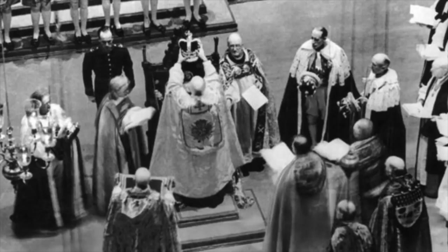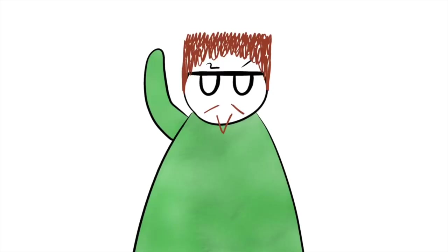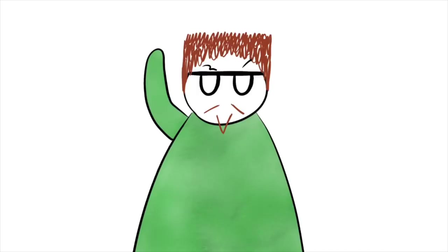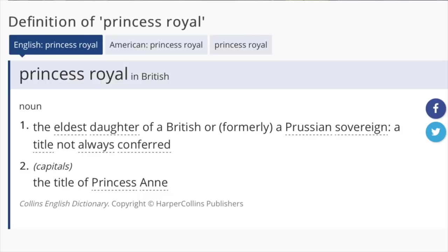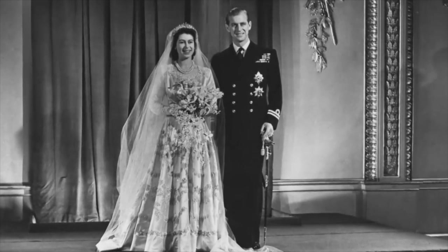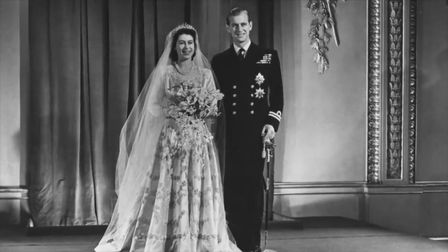When her father did become king, she lost the title of York, as her parents were no longer the Duke and Duchess of York — they were too busy being king and queen. She simply became Her Royal Highness the Princess Elizabeth. You may think that at some point she should have held the title of Princess Royal, which is given to the eldest daughter of the monarch, but this title was already taken when she was born. In 1947, she married Philip, and on her wedding day her husband was granted dukedom status.